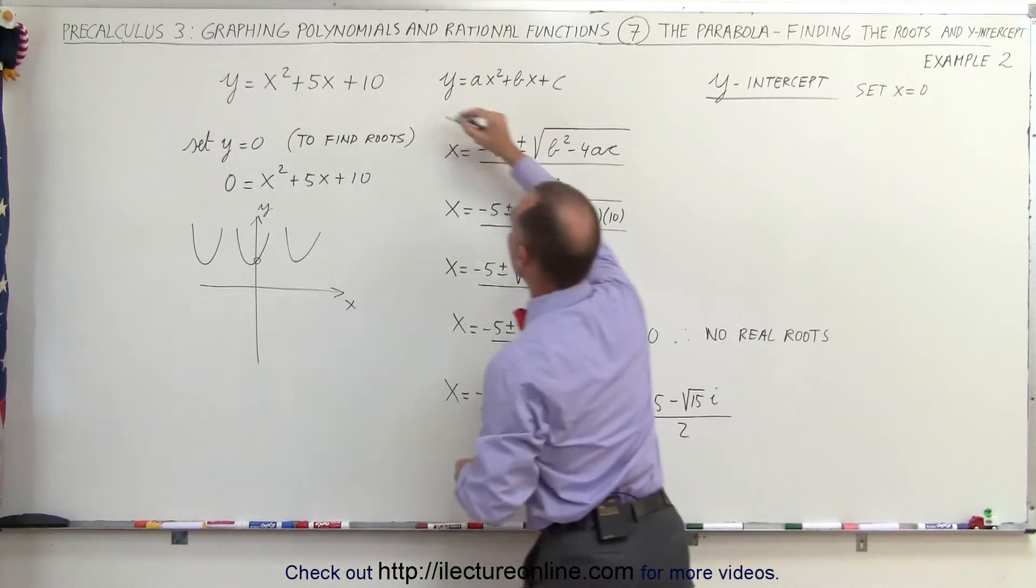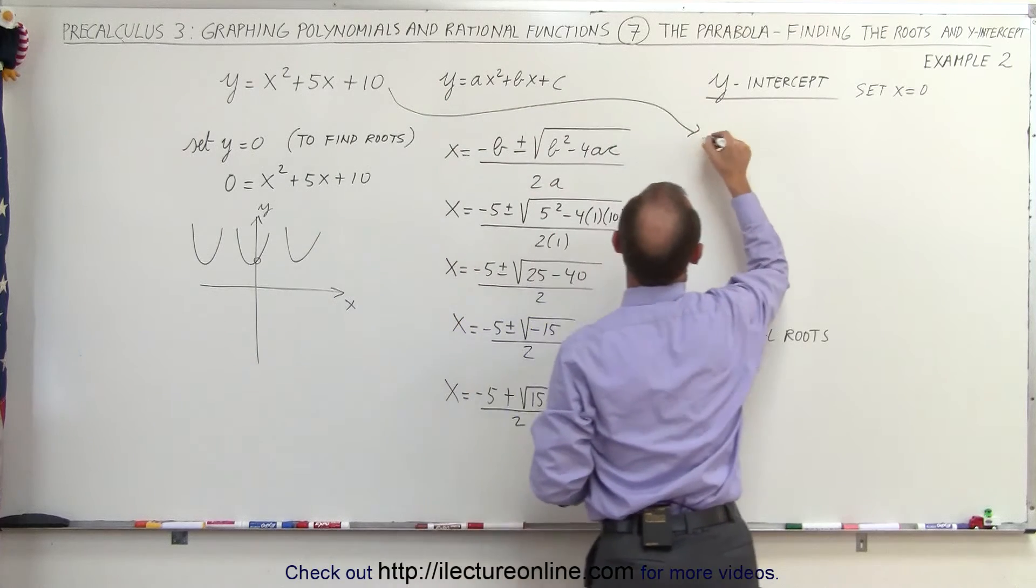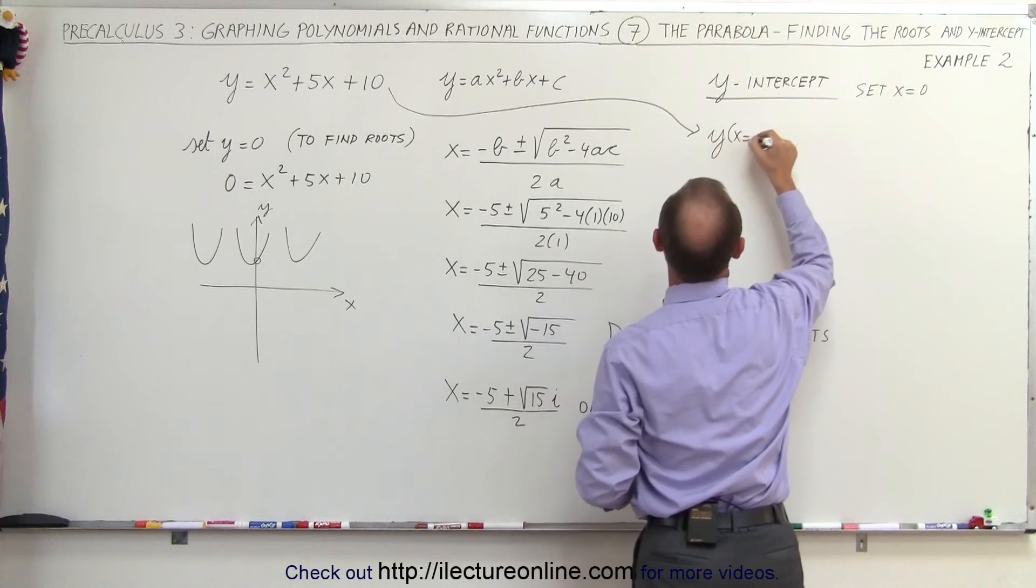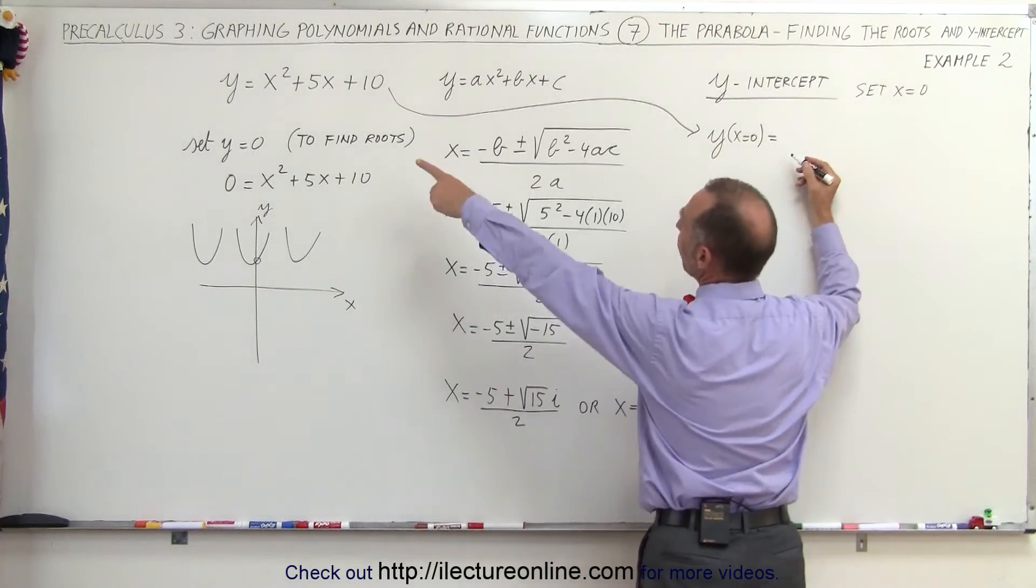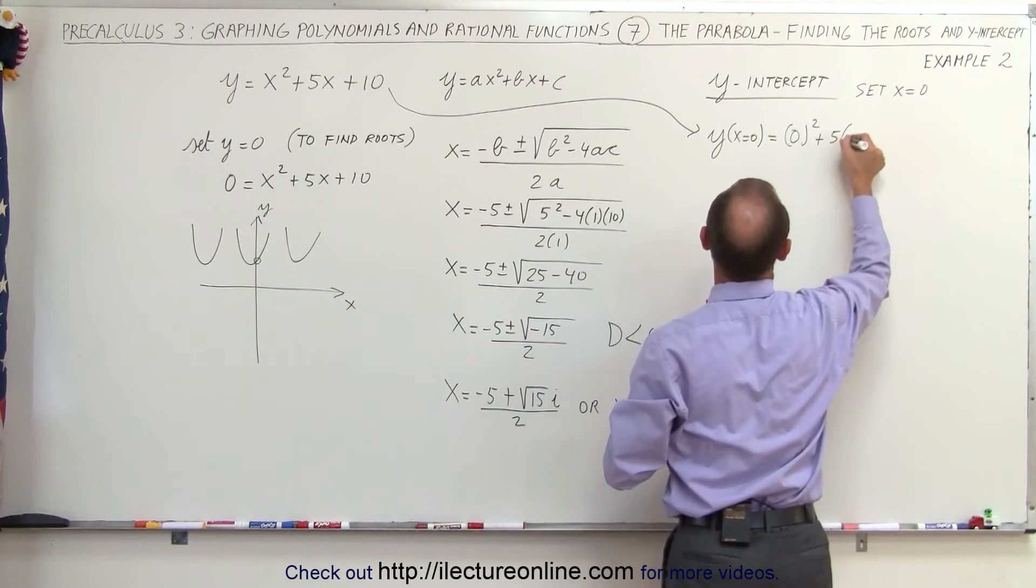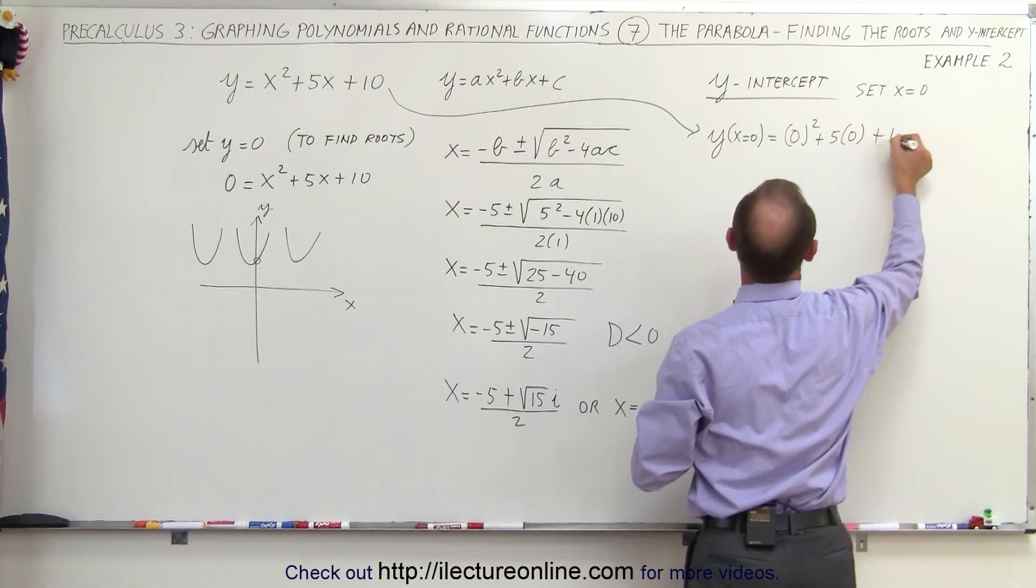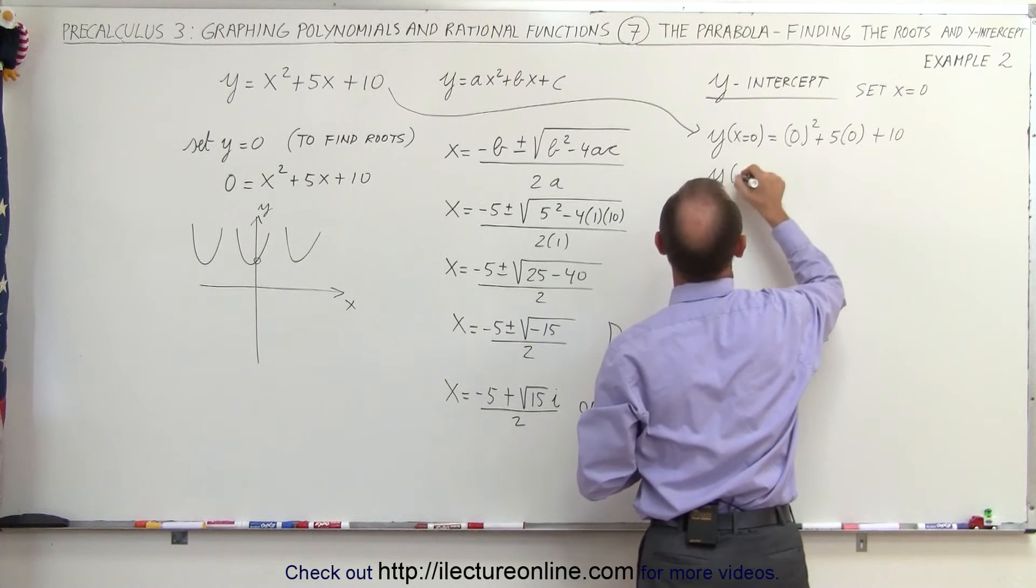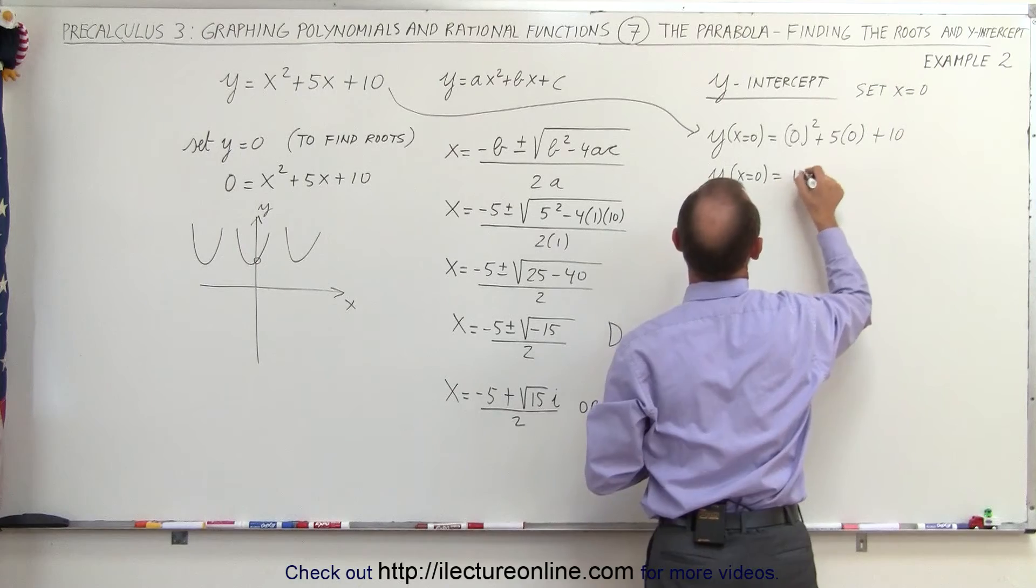When we take our equation, we say y when x is equal to 0 is equal to 0 squared plus 5 times 0 plus 10, or y when x equals 0 is equal to 10.